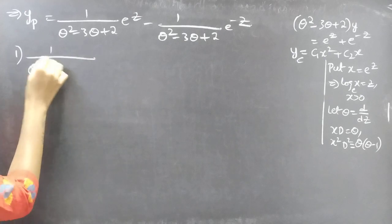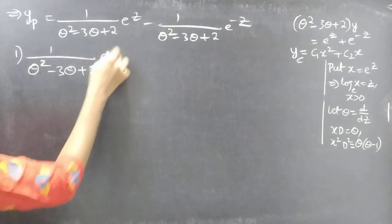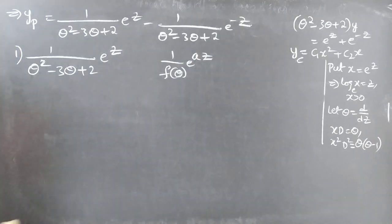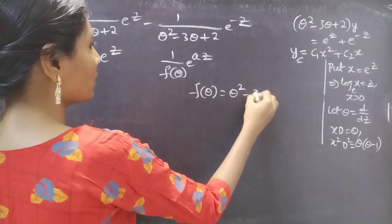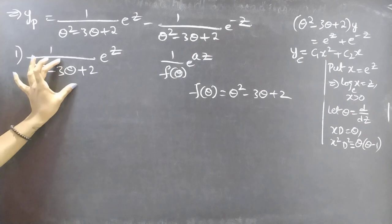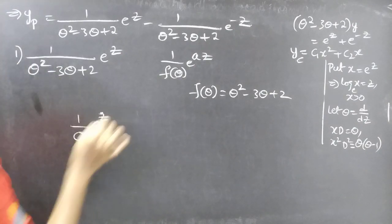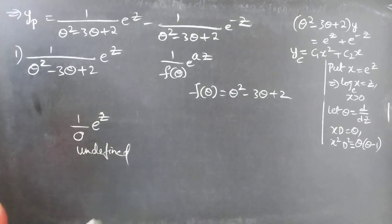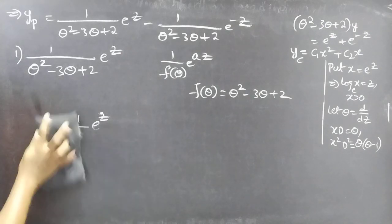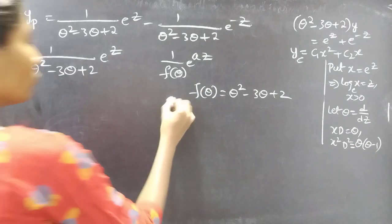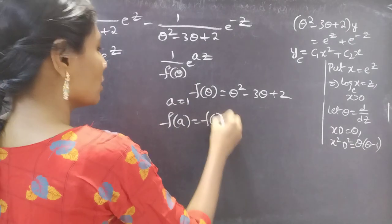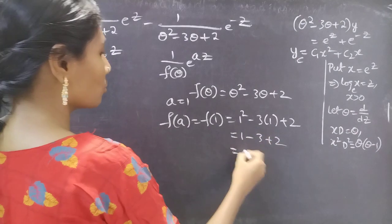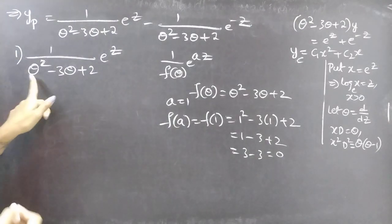For the first term: 1 by f(theta) into e to the power z. This is of the form 1 by f(theta) into e to the power az, with a equals 1. We find f(1): 1 squared minus 3 times 1 plus 2 equals 1 minus 3 plus 2 equals 0. The denominator is zero, so we cannot directly substitute. Remember, the denominator must be non-zero; if it is zero the expression is undefined.